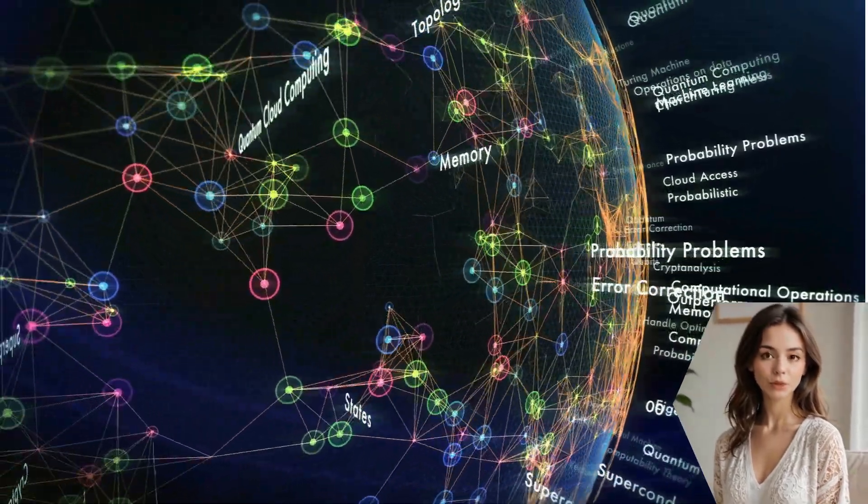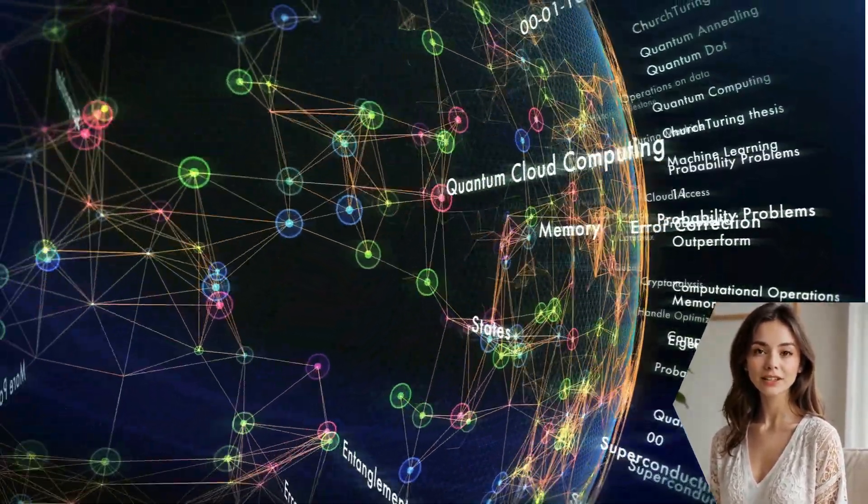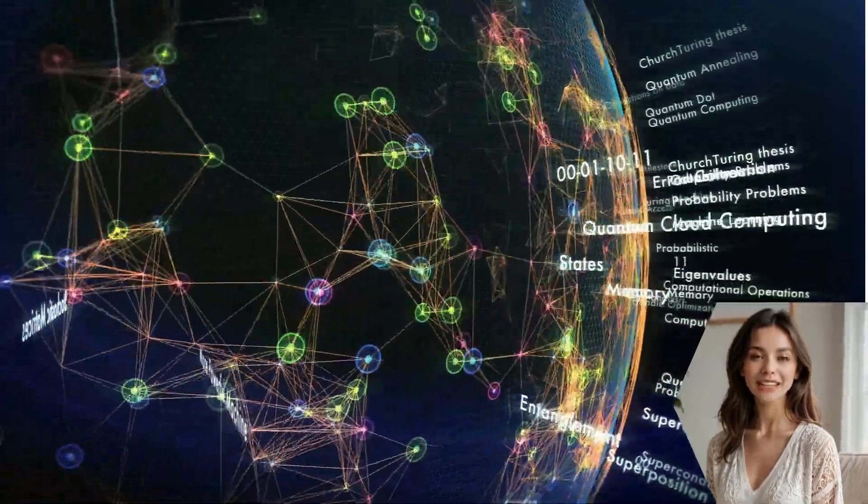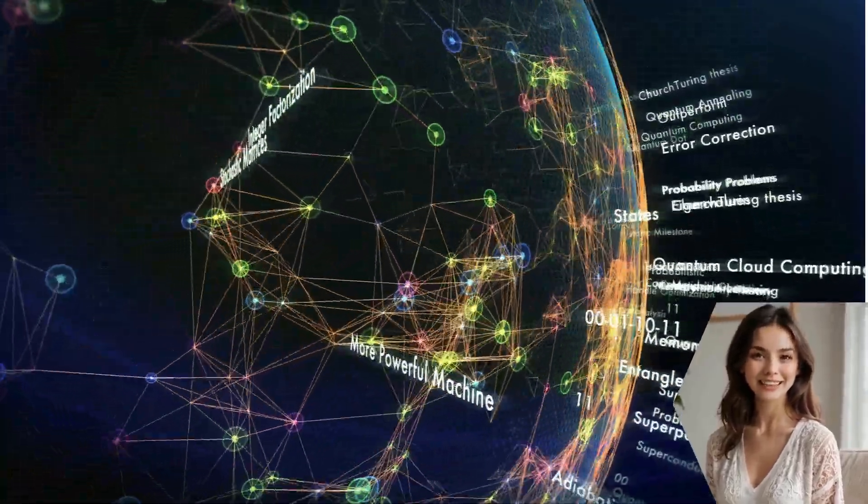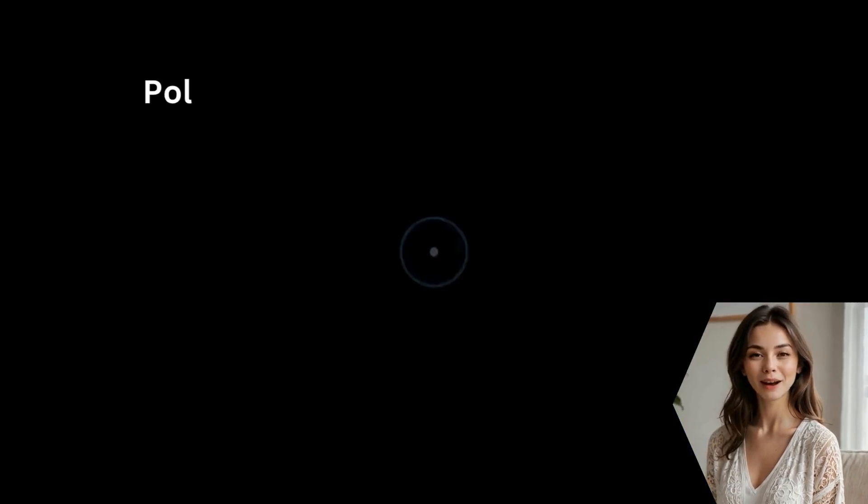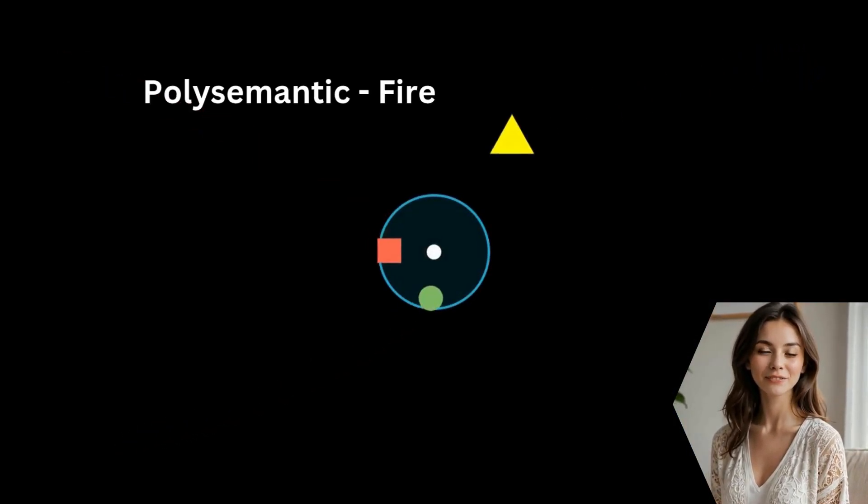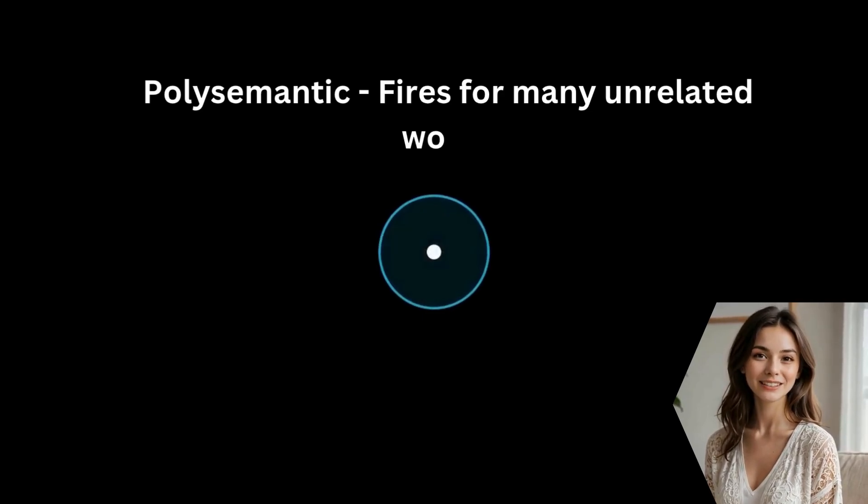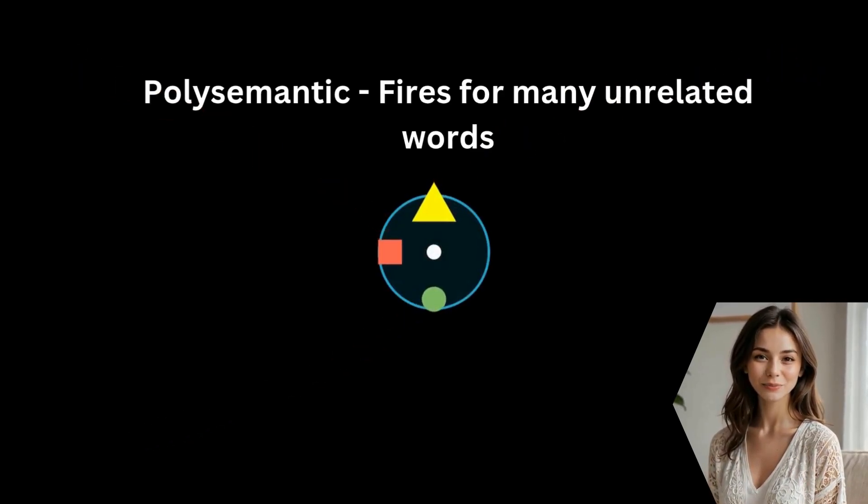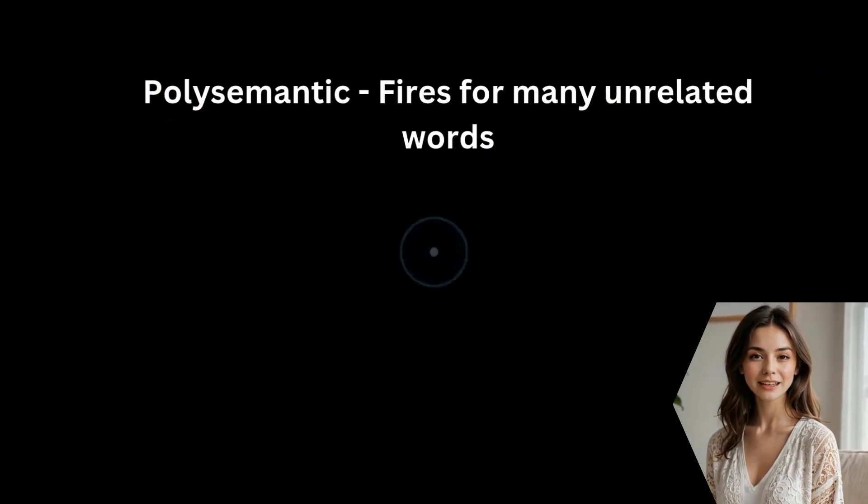So, how does this AI microscope work? Well, trying to understand an LLM by looking at individual neurons is a dead end. A single neuron can be polysemantic, meaning it might fire for totally unrelated things, like the word cat, the concept of grammar, and the color blue, all at once. It's messy.